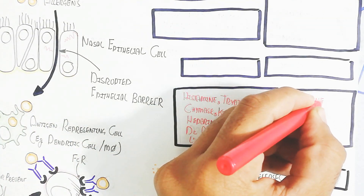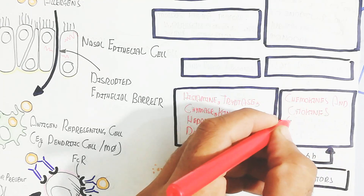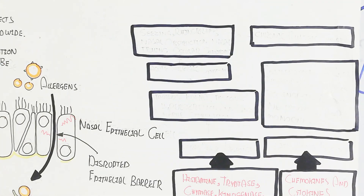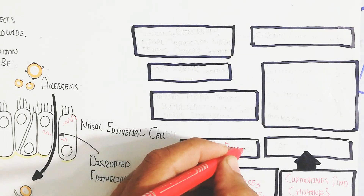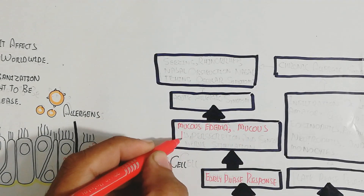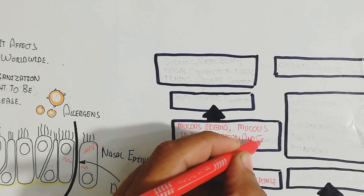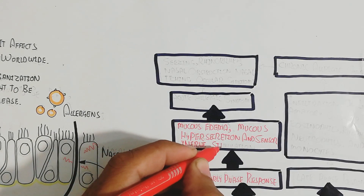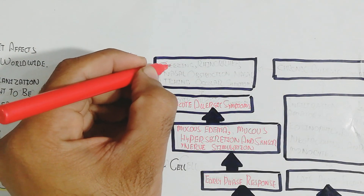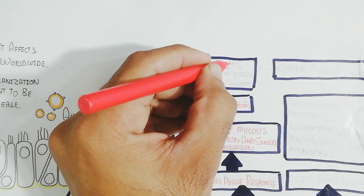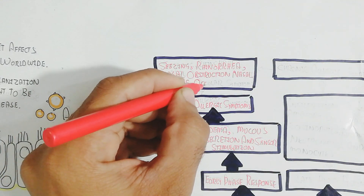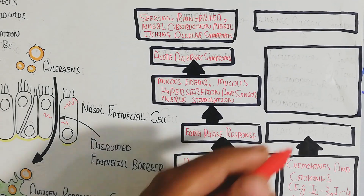The mediators released within one minute constitute the early-phase response, during which mucus hypersecretion, mucosal edema, and sensory nerve stimulation occur. This leads to sympathetic nervous system activation causing coughing and further complications. Acute allergic symptoms arise including rhinorrhea, nasal obstruction, nasal itching, and ocular symptoms. Within four to six hours, chemokines and cytokines such as interleukins 3, 4, and 5 are released, recruiting further immune cells and causing more severe inflammation.